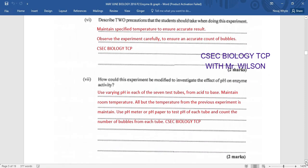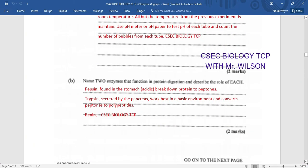How could this experiment be modified to investigate the effect of pH on enzymes? Now, there's a lot of things that we need to do. We need to use varying pH in each of these seven test tubes, from acid to base. We need to maintain of course room temperature. So what we are going to observe here is that all but the temperature from the previous experiment is maintained. Use pH meter or pH paper to test the pH of each tube and count the number of bubbles from each tube. And you, having done this, you would have received two marks for that question.